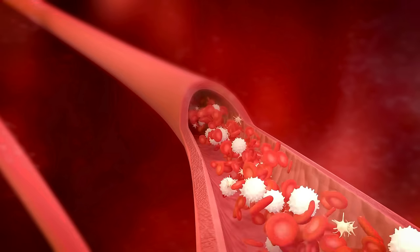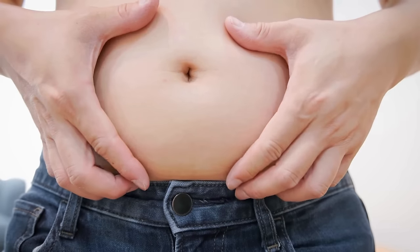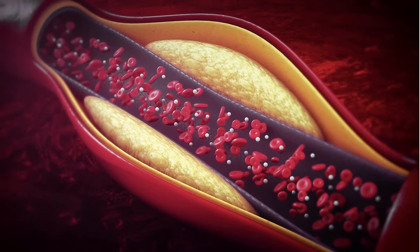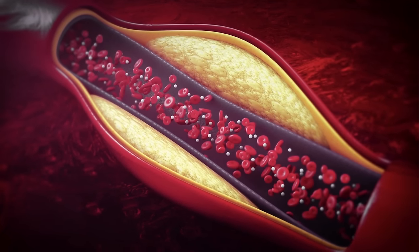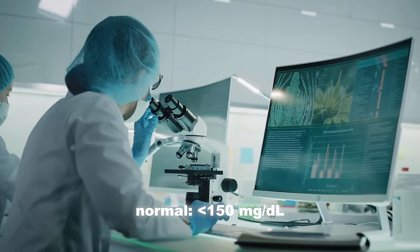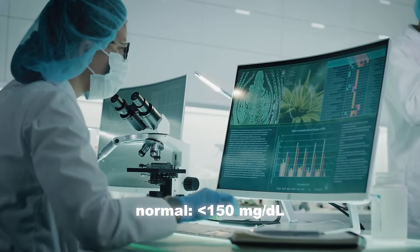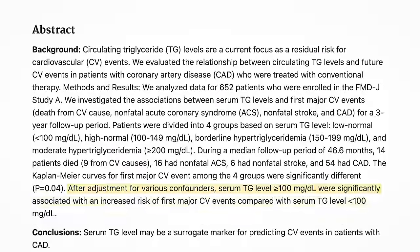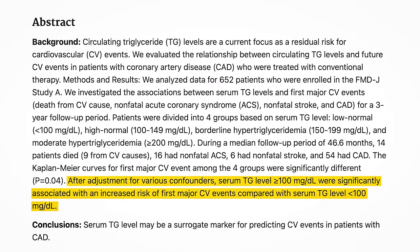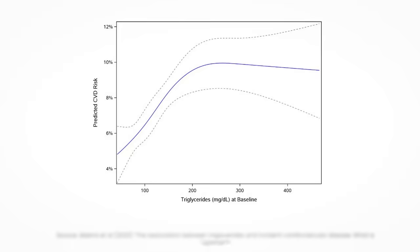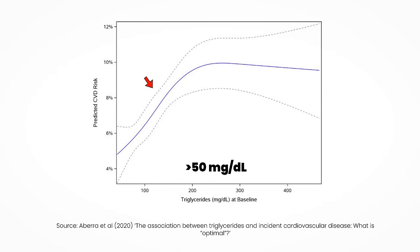Let me give you an example of a biomarker where there's a huge difference between normal and optimal. Triglycerides are fatty acids in the blood used for energy. Too high triglyceride levels are causally implicated in diabetes and metabolic syndrome. Most labs use the reference range of 150 mg per deciliter as the cut-off point for normal triglycerides. However, it's found that higher triglycerides, even below the 150 mg per deciliter level, are associated with increased risk of cardiovascular disease. Every doubling of triglycerides above 50 mg per deciliter increases the risk of cardiovascular disease by 65% compared to triglycerides below 50 mg per deciliter.